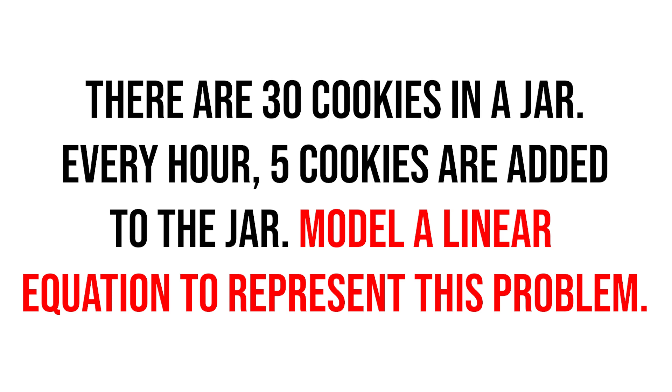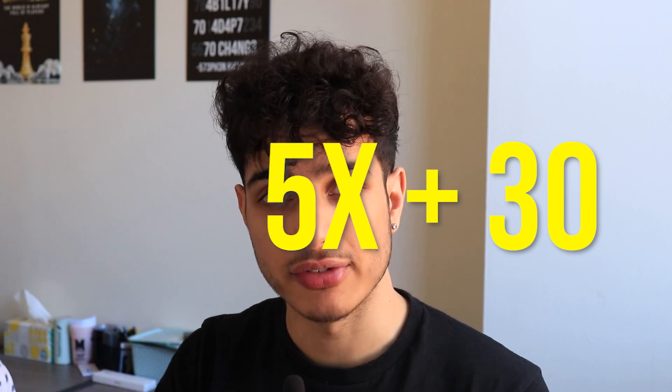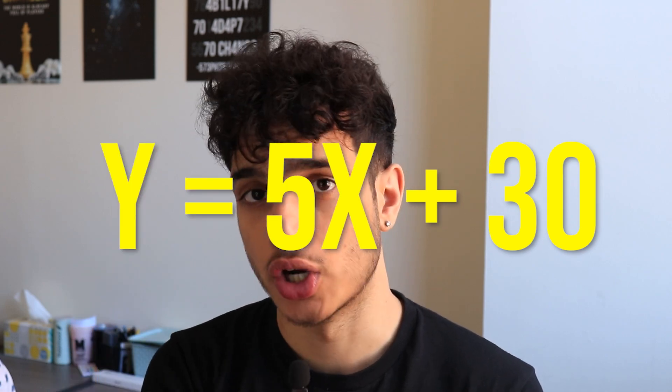For example, how to read a couple of sentences and create your own linear equation. Say the sentence is: 'There are 30 cookies in a jar; every hour there are 5 more cookies.' You just have the y-intercept as the initial amount at 30, and the rate of change is 5 every hour. So x is the number of hours, the slope is 5, and y is the total cookies. Your equation is y = 5x + 30.